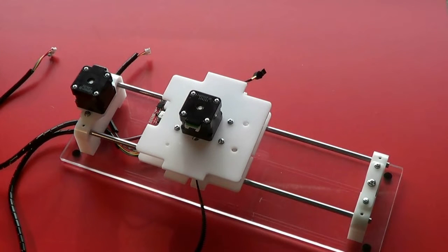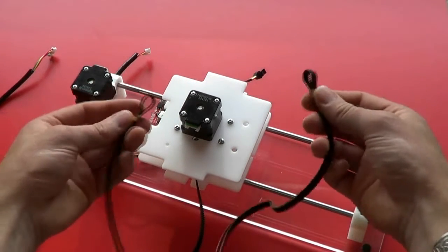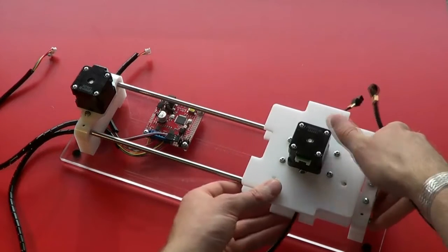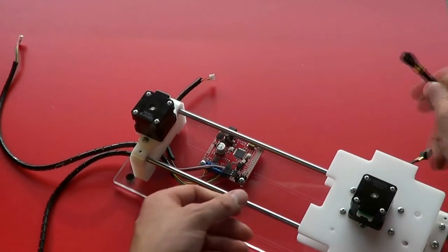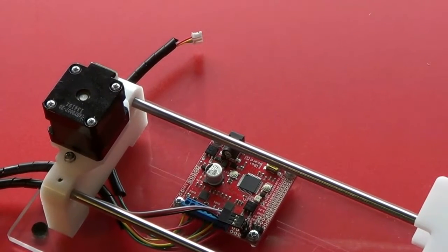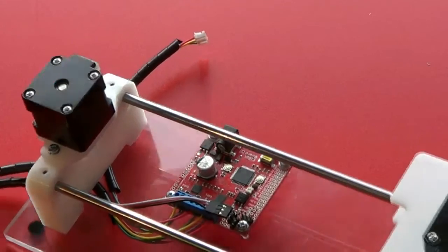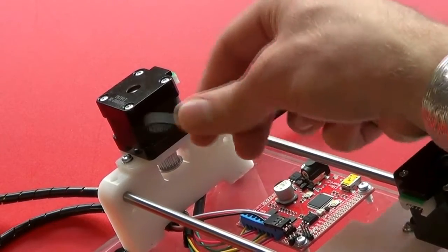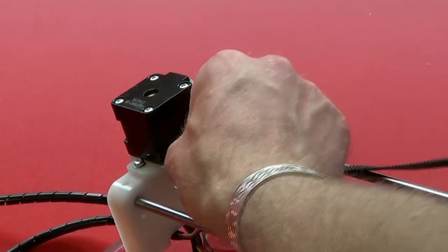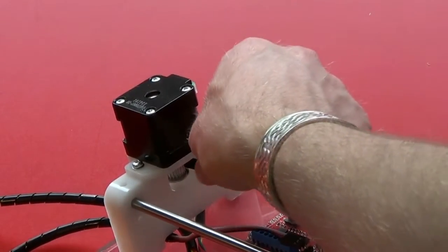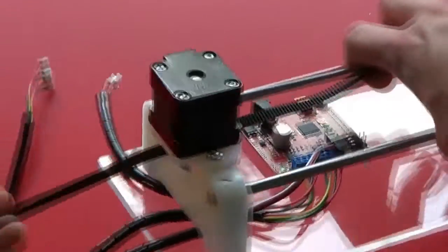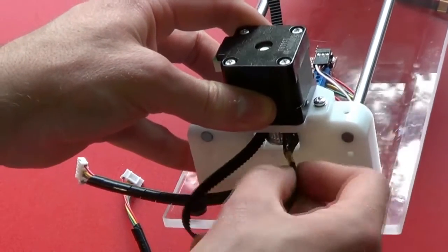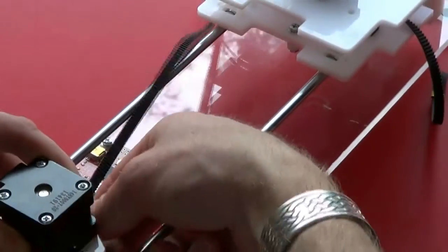Next, we take the X belt. That's the longer of the two belts. And we pass it around, first of all, the motor pulley. With the teeth of the belt facing you, pass it around the back side of the motor pulley. Pull it through. Then pass it around the front of the motor pulley. And pull it back.